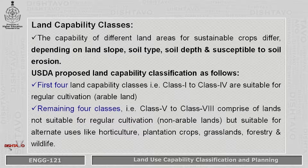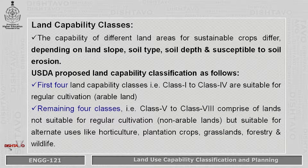The USDA — that is the United States Department of Agriculture — proposed this land capability classification. They classified the land into eight groups. The first four groups, that is class 1 to class 4, are suitable for regular cultivation and are called arable land. The remaining four classes, from class 5 to class 8, comprise land which is not suitable for regular cultivation — meaning non-arable land.